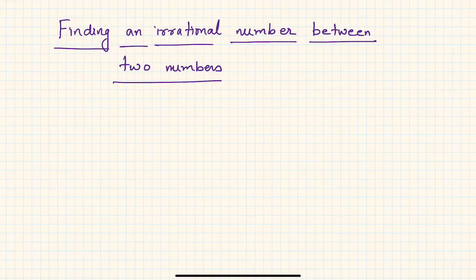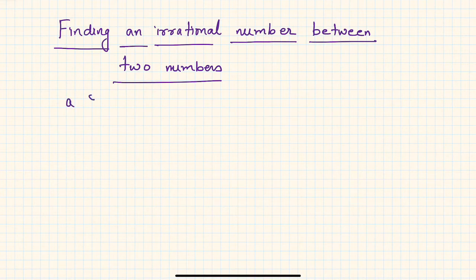Welcome again to another session on number system. In this topic we are going to discuss finding an irrational number between two numbers. Let us say if there are two numbers given, a and b, and you are asked to find out an irrational number between them, then how to go about it.